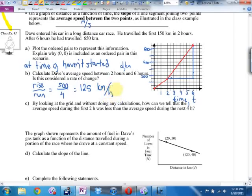Then it says this: by looking at the grid and without doing any calculations, how can we tell that the average speed during the first 2 hours was less than the average speed during the next 4 hours? How can you tell that he was going slower here than here? Yep. We're going to use a math word though. We're going to say less steep, and that way I can relate it to slope.